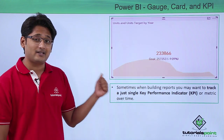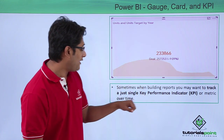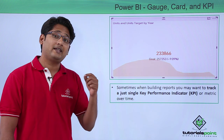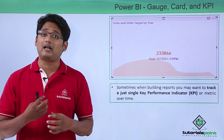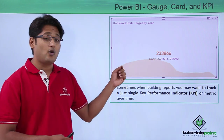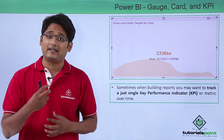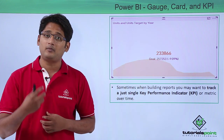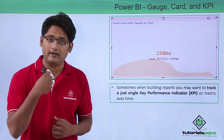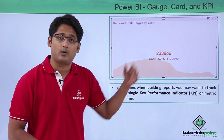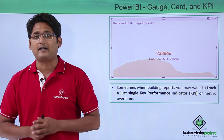The third visualization is the KPI indicator. Sometimes when building reports you may have to track just one single key performance indicator. When you have a target column ready, you can see what goal has been achieved so far and what the lag is behind. The KPI visualization will automatically analyze the data you provide and give you a visualization showing performance against target.